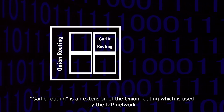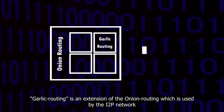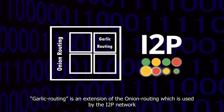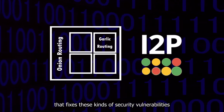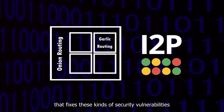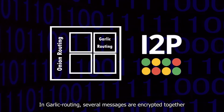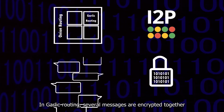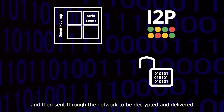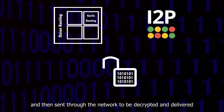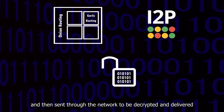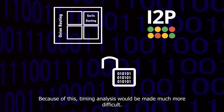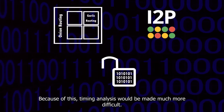Garlic routing is an extension of onion routing which is used by the i2p network that fixes these kinds of security vulnerabilities. In garlic routing, several messages are encrypted together and then sent through the network to be decrypted and delivered. Because of this, timing analysis would be made much more difficult.